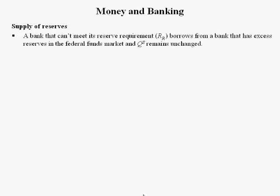Now imagine you're in the vault at the federal reserve and there's a stack of cash, a stack of million dollars in the corner with bank A's name on it. When this transaction goes down, all the Fed basically does is take down bank A's name on that stack of cash and put bank B's name on it. So that's why the quantity of reserves remains unchanged.